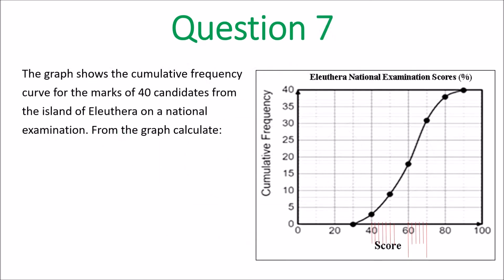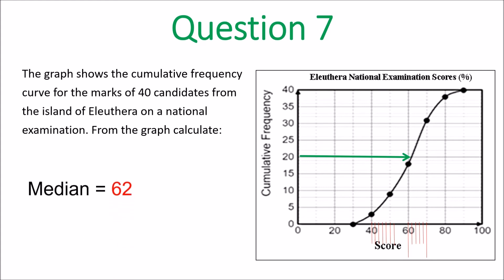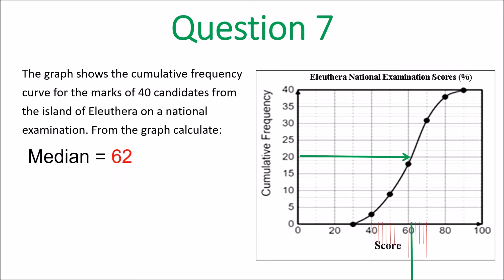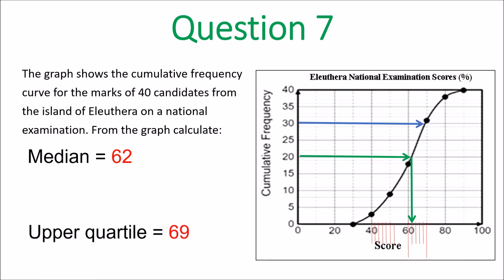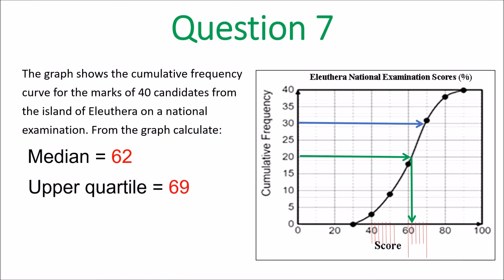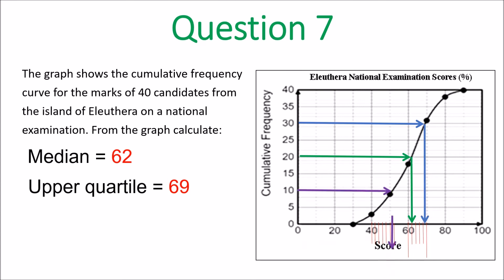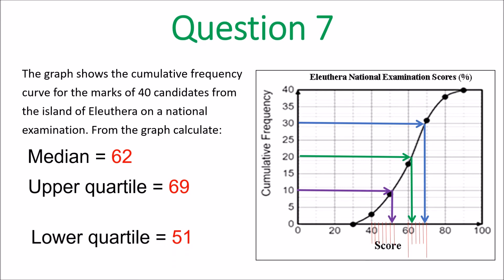Question 7. You have to draw across from 20 and down — that's 62. Then draw from 30, that's the upper quartile and down — that's 69. Then draw from 10 down — the lower quartile is 51.